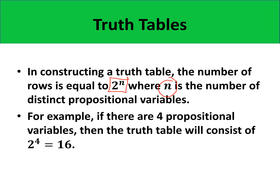For example, if there are four propositional variables — P, Q, R, and S — then the truth table will consist of 16 rows. As the number of propositional variables increases, the number of rows of the truth table exponentially increases.